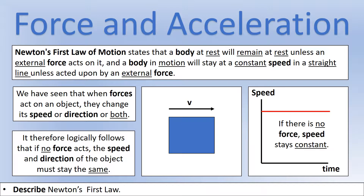Previously we saw that we need a force to change the speed or the direction or both. The opposite follows: if there is no force, the speed and direction must stay the same — and that's what Newton's first law tells us. If we were to plot a speed versus time graph, it would be a horizontal line because the speed stays at the same value the whole time, since there's no force acting.